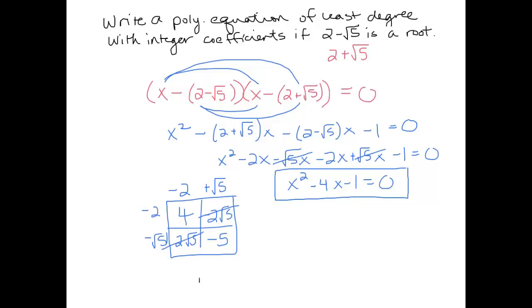And in the end, we get x squared minus 4x minus 1 equals 0. Again, it's a least degree. It's a quadratic because we were only given one root. Its conjugate had to be a root. That was a total of 2.